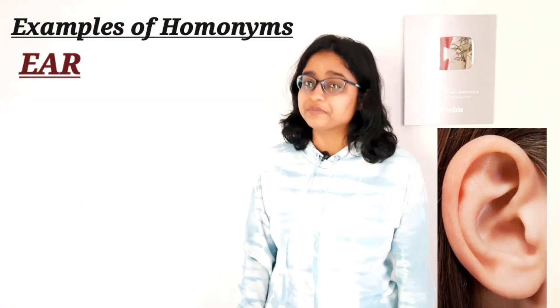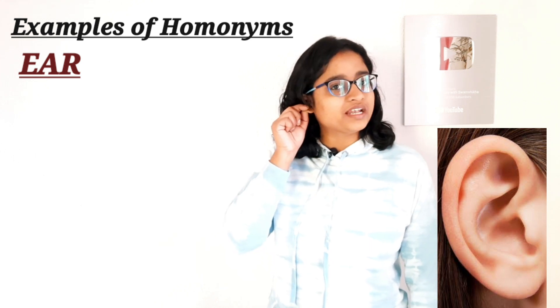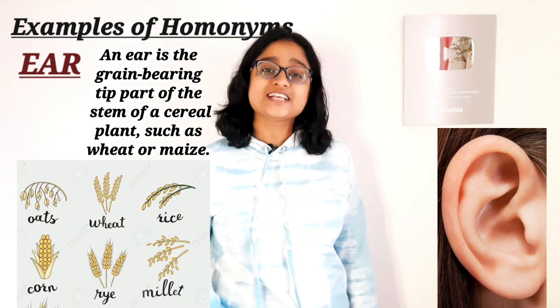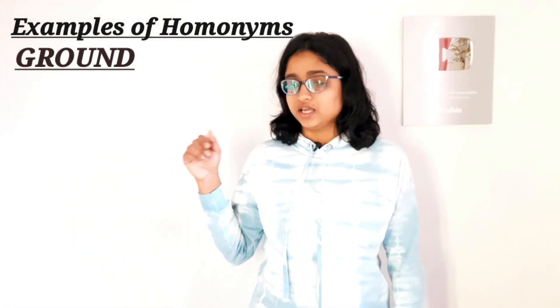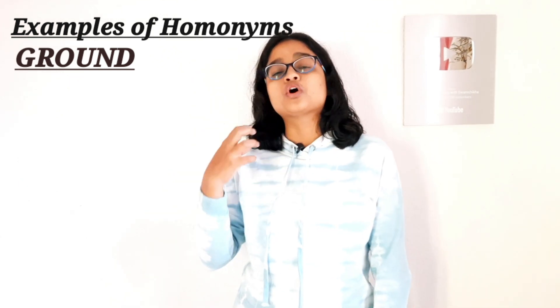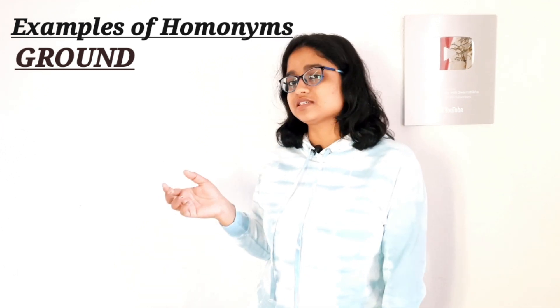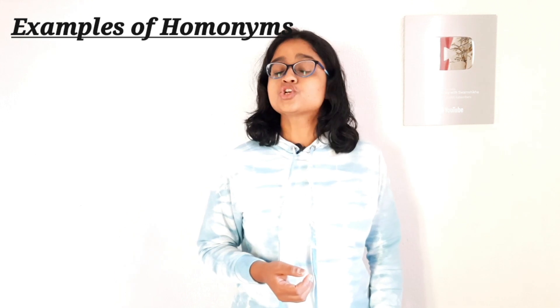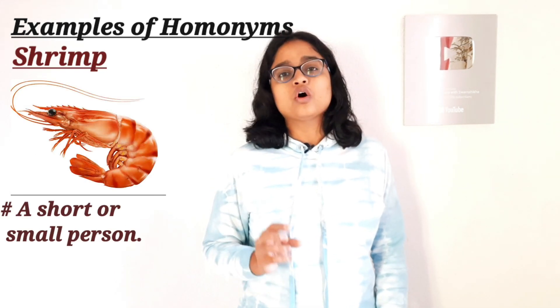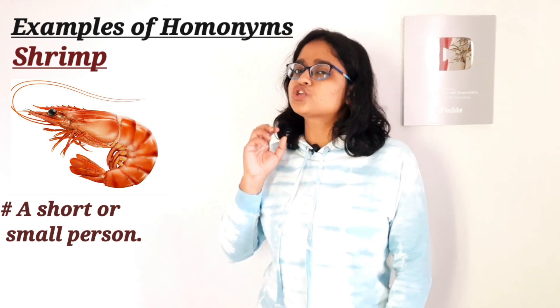Another example is 'ear' — the body part, ear — and it is also the name of a cereal plant. Next, 'ground' means a play area, but 'ground' is also the past tense of the verb 'grind,' which means to crush something. Another example of homonyms is 'shrimp' — shrimp is a small shellfish, and a very small person can also be called a shrimp.